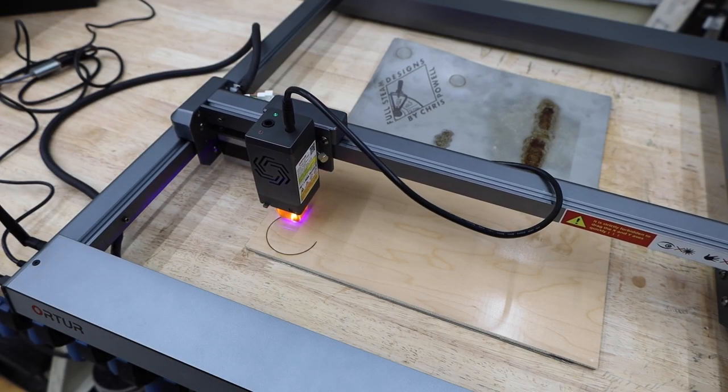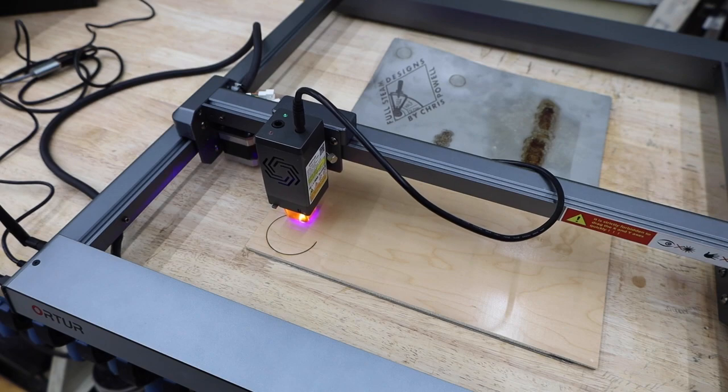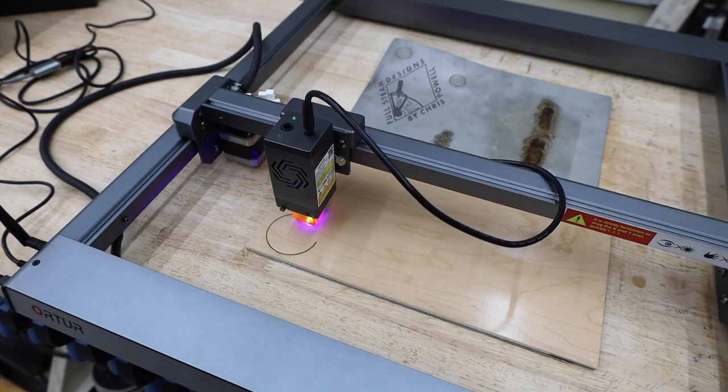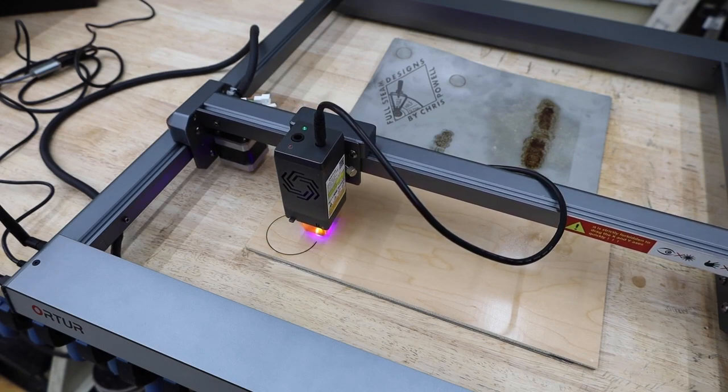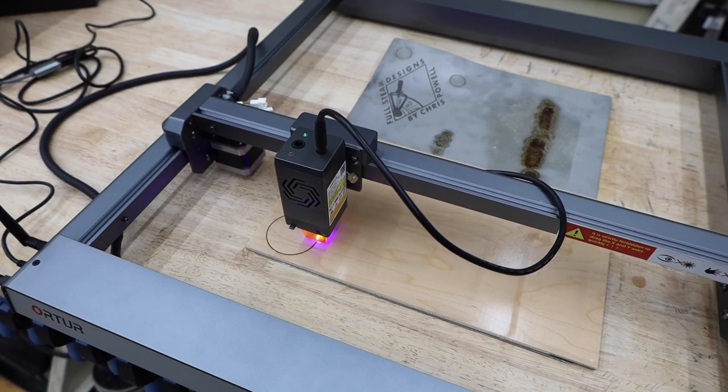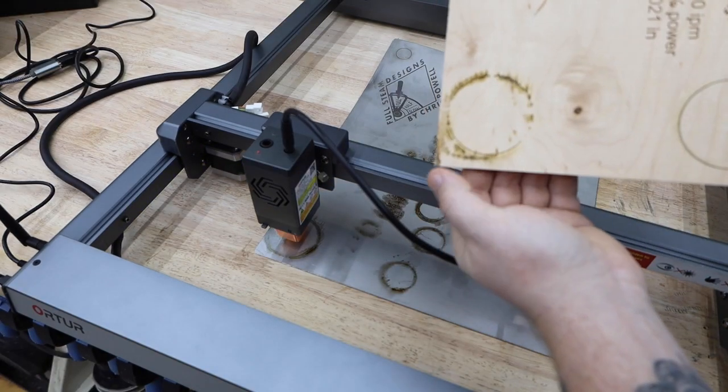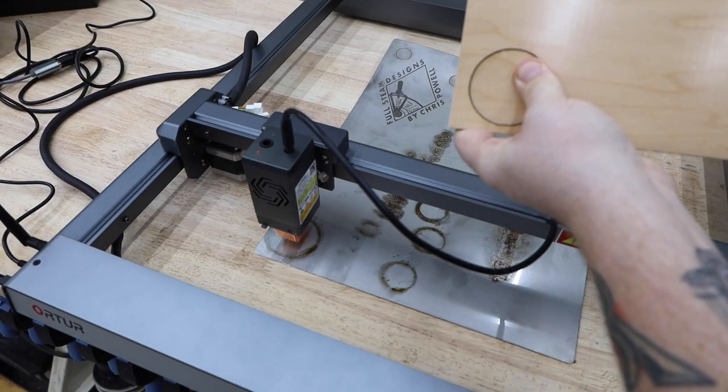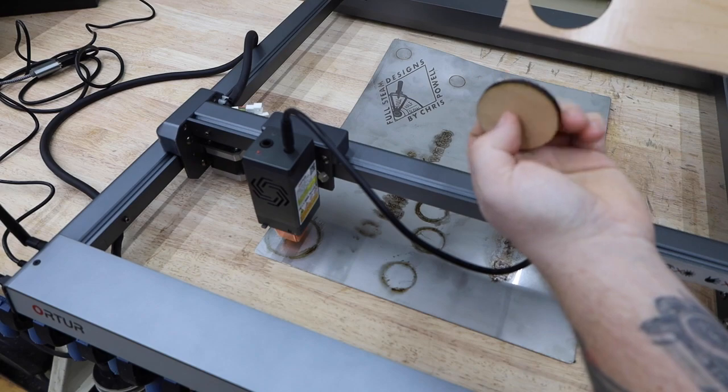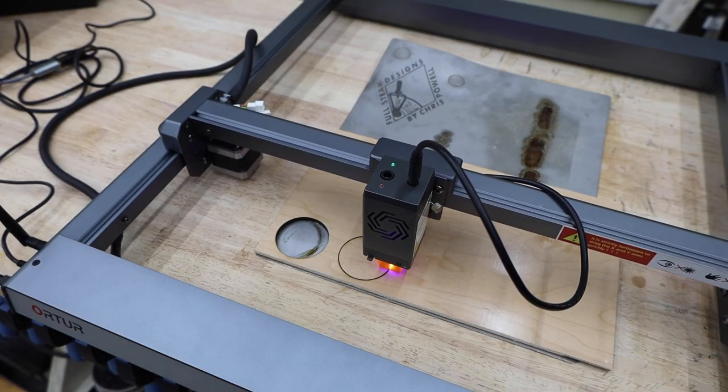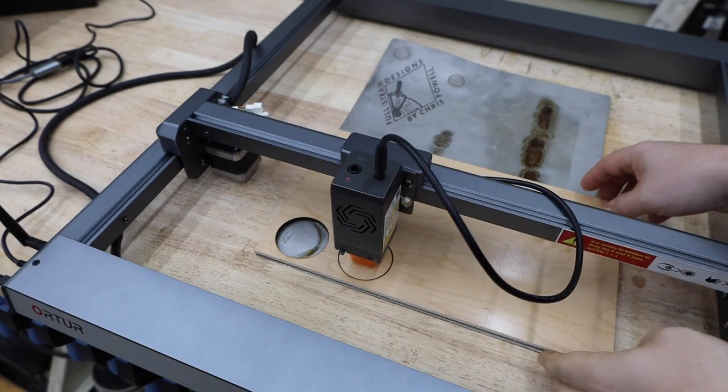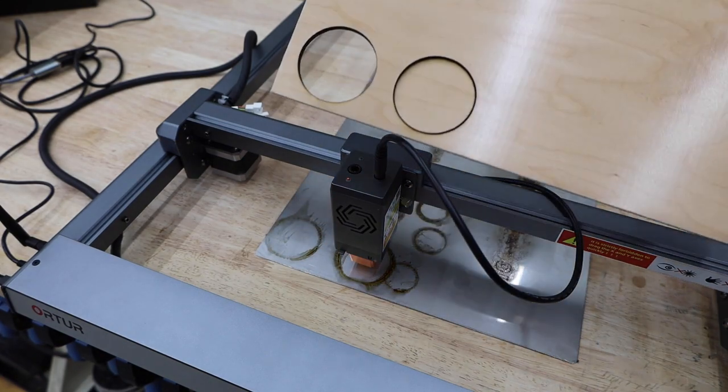Now let's see how it performs while cutting. I made one pass at 10 inch per minute and 100% power. It cut through most of it, but the part didn't easily pop out. Next I slowed it down to 5 inch per minute. This time it cut through with no problem.